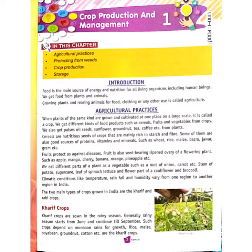We get different kinds of food products from crops such as cereals, fruits, and vegetables. We also get pulses, oil seeds like sunflower and groundnuts, as well as tea and coffee from plants.